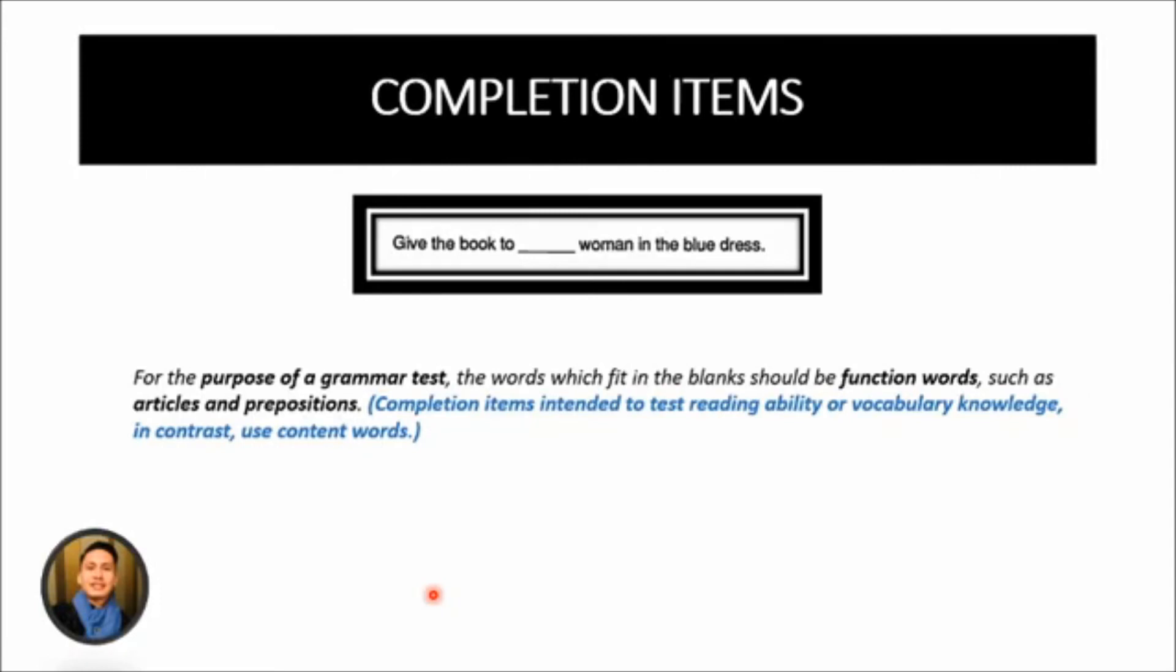For the purpose of a grammar test, the words which fit in the blanks should be function words. When we say function words, these are the articles and then the prepositions. On the other hand, completion items intended to test reading ability or vocabulary knowledge, in contrast, you have to use content words. The advantage of completion items is that they test production, not just recognition. And the disadvantage is that they need to be marked by hand. And there will be some cases where the marker needs to make judgments about whether a response is correct. It is time-consuming.